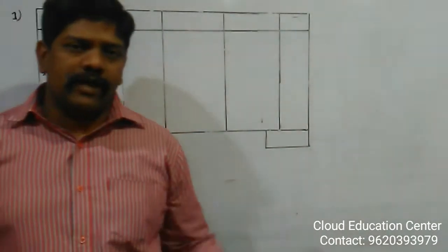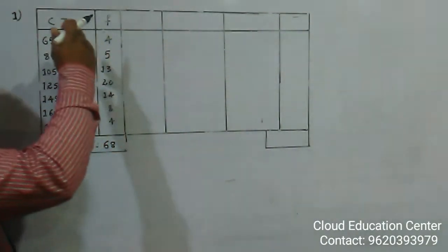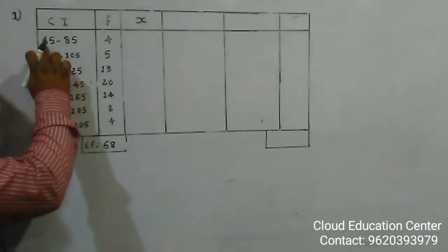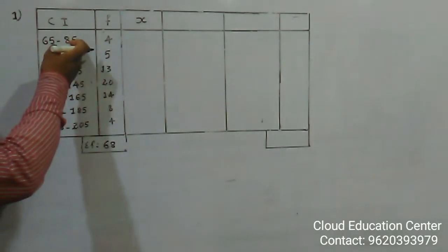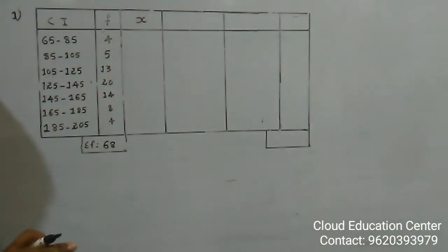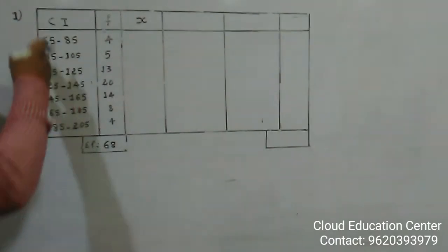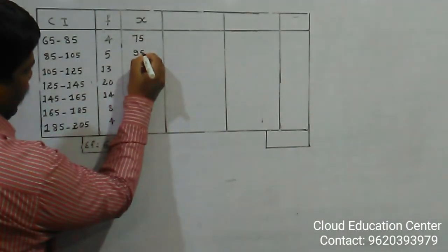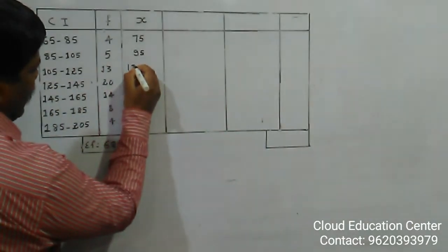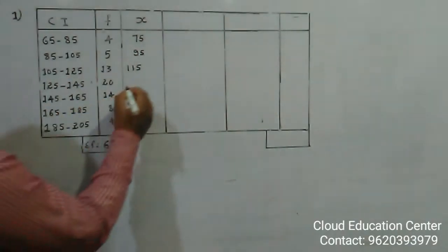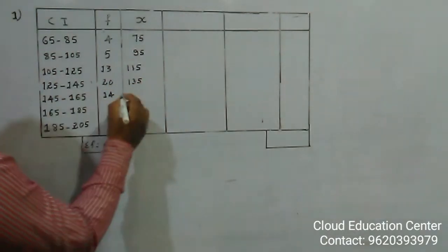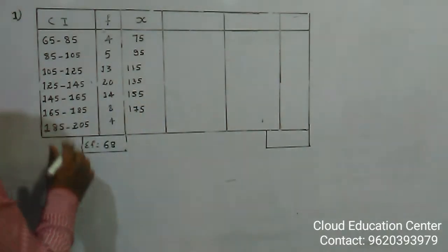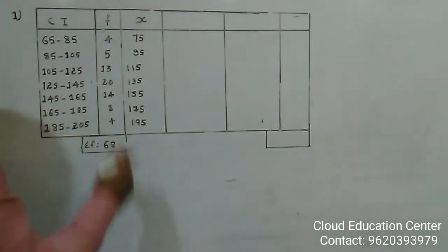We found mode and median. Now we will find the mean. To find the mean we need the midpoints, called xm. Add the lower and upper class limits and divide by 2 — equivalently, add half the class width (10) to each lower limit: 75, 95, 105, 115, 135, 145, 155, 175, 195.